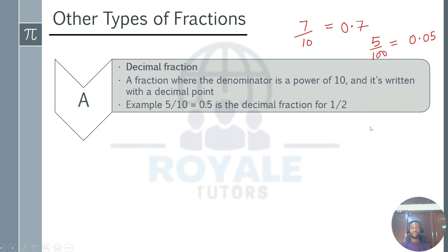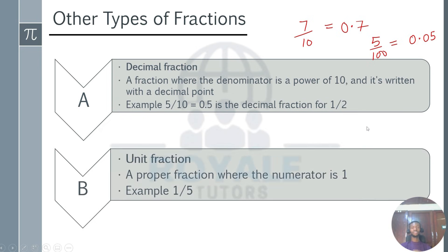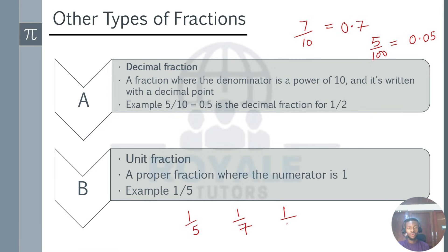We also have unit fractions. Unit fractions are proper fractions where the numerator is 1. It can be 1 over 5, 1 over 7, 1 over 10, or 1 over 100. All these are unit fractions because they have the numerator as 1.